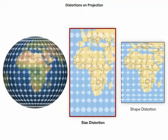In the map showing size distortion, the projection preserves the circle's correct shape, but the circles vary in size or area as distortion increases away from the equator.